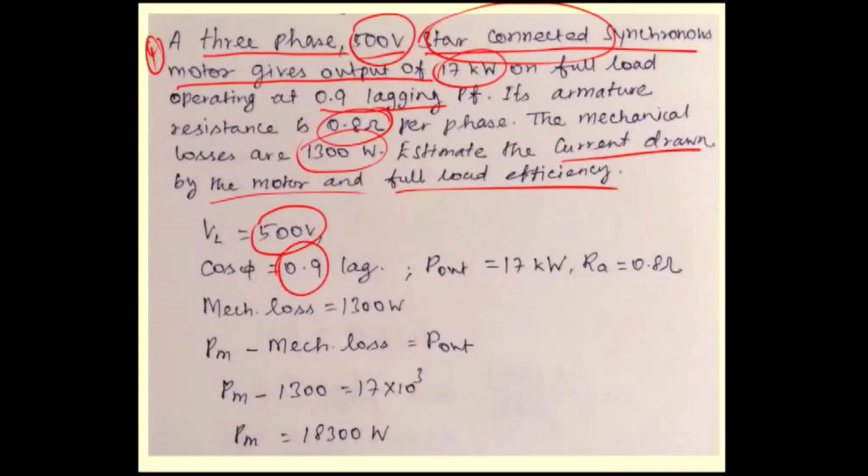Output power is 17 kilowatt. RA value is given, mechanical loss is 1300 watts. Output power is nothing but gross mechanical power developed minus mechanical loss. This is one formula, just at this stage remember this formula. In third unit I will draw the power stages of the motor, in that you can understand this equation.